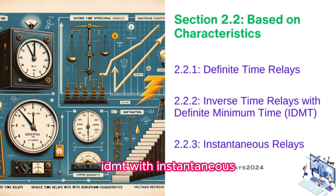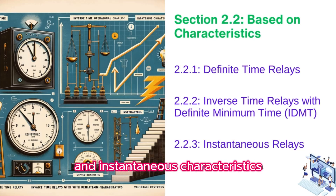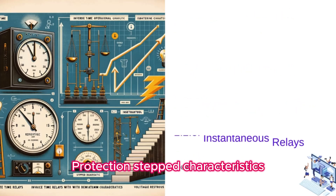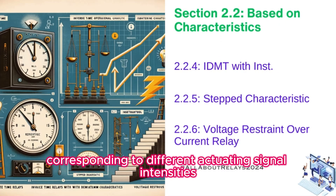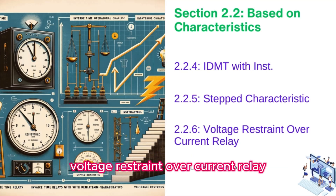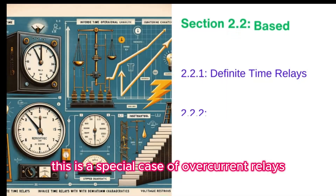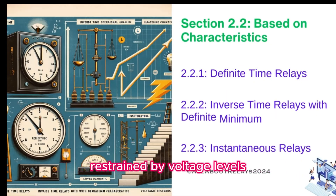IDMT with instantaneous relays combine IDMT and instantaneous characteristics for more nuanced protection. Stepped characteristics relays have multiple operating times corresponding to different actuating signal intensities. Voltage restraint over-current relay is a special case of over-current relays restrained by voltage levels.